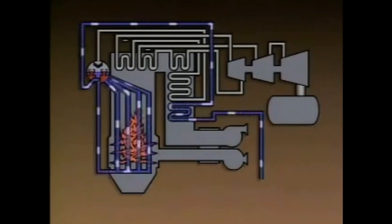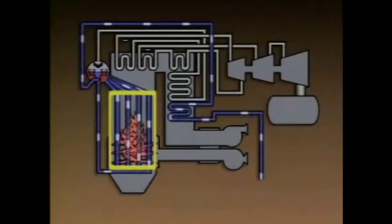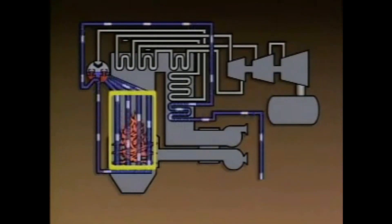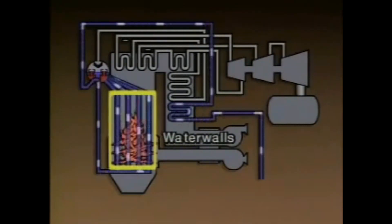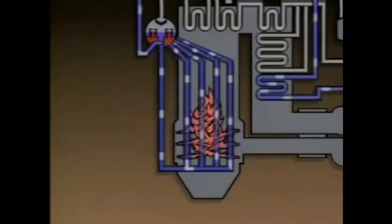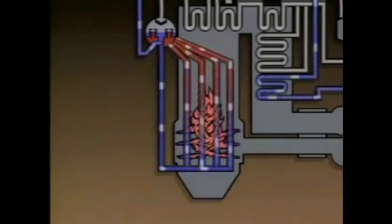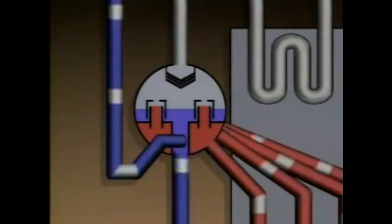The lower headers supply water to the bottoms of the boiler tubes. The boiler tubes, which line the inside walls of the boiler furnace, are commonly called water walls. The water walls are exposed to the heat produced by burning fuel. As water flows up through the water walls, heat turns some of the water into steam. The mixture of water and steam rises until it enters the boiler drum, where it is separated into water and steam.